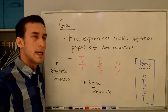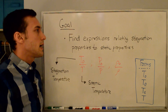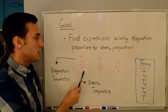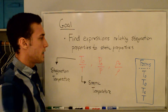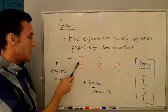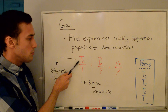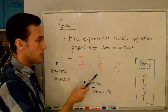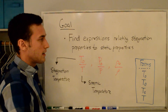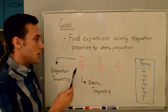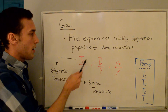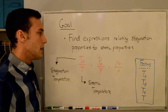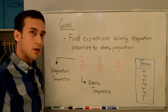In this video we're going to be talking about stagnation properties, specifically finding the equations or expressions for the stagnation to static temperature, pressure, and density. You can see that the stagnation temperature appears in the numerator and the static temperature is in the denominator. Similarly, stagnation pressure over static pressure, and stagnation density over static density. We pronounce it T0 for the stagnation temperature.